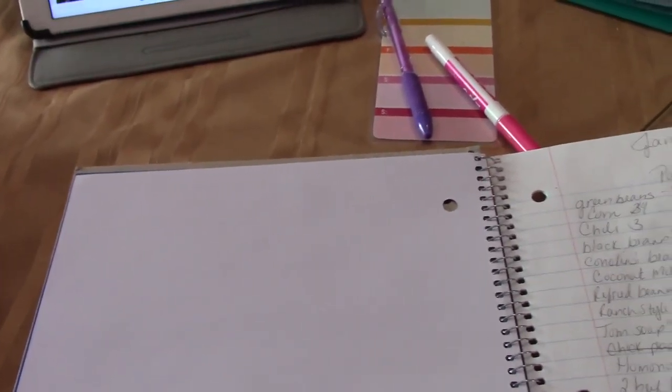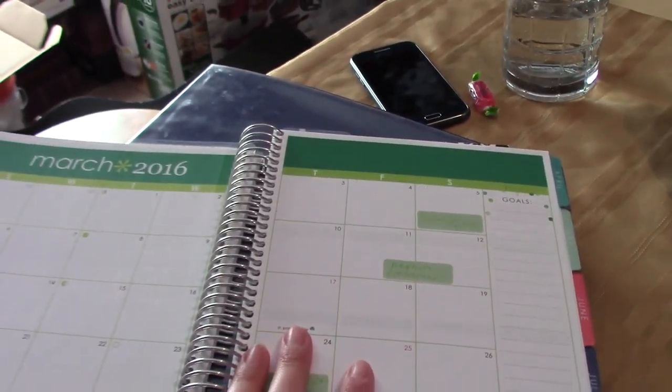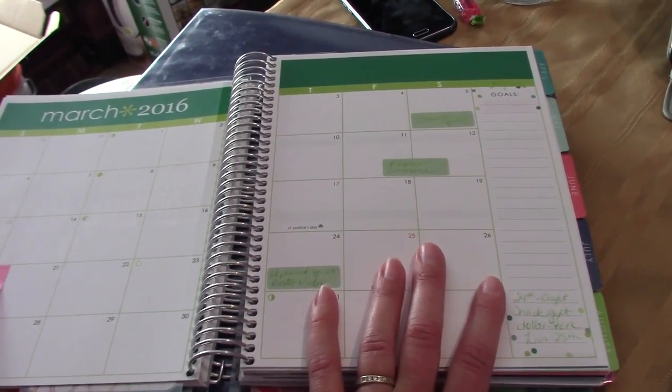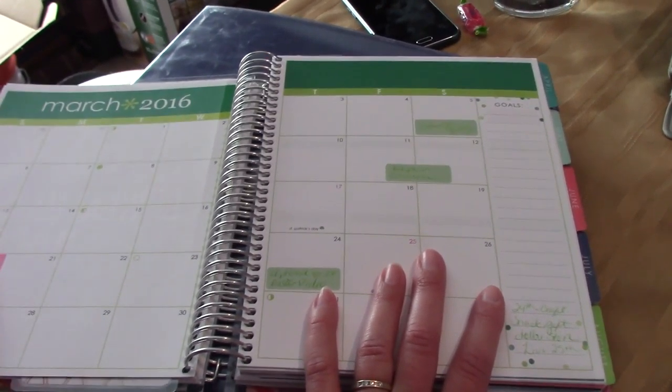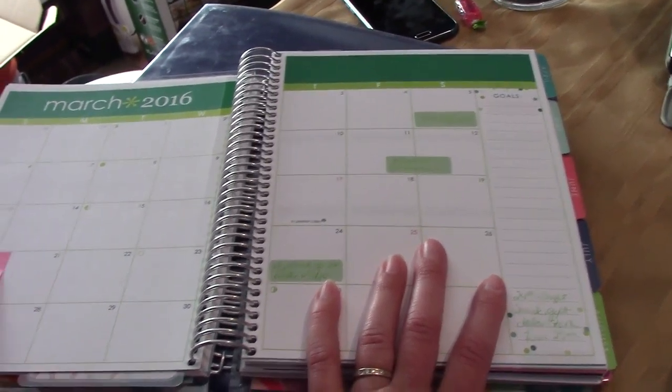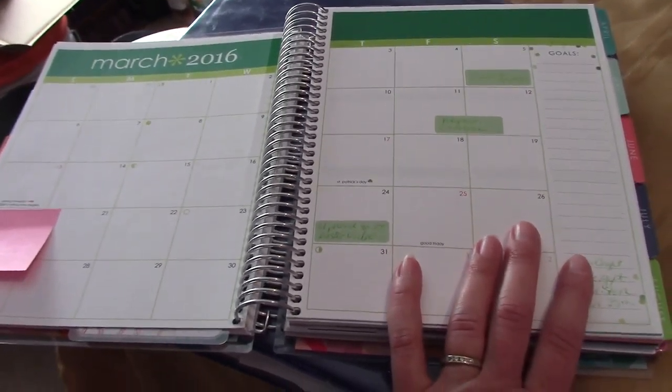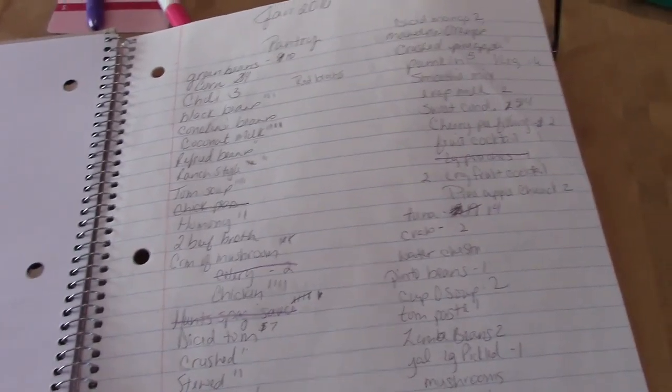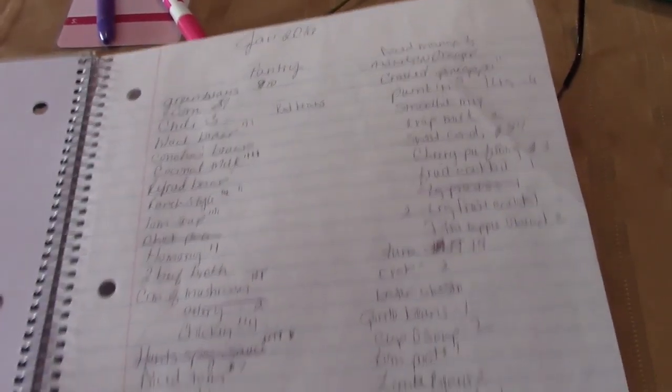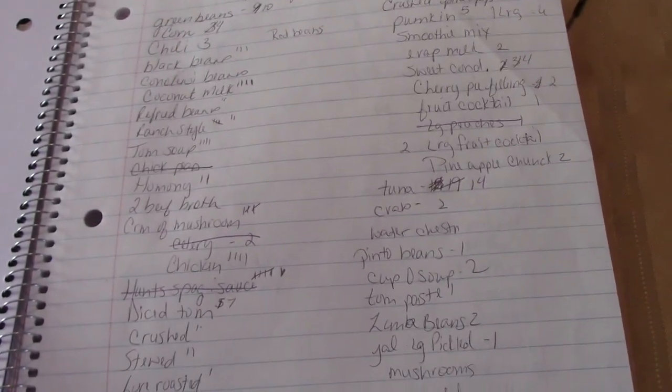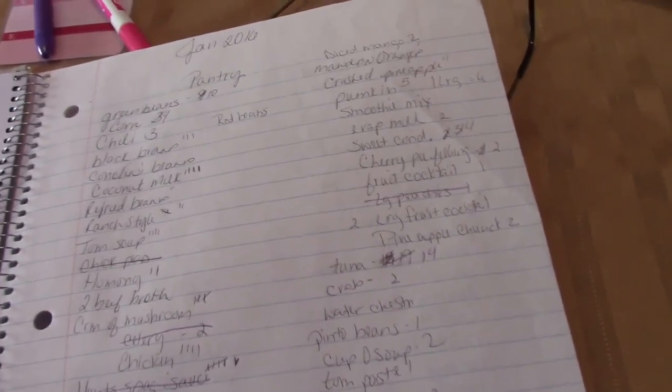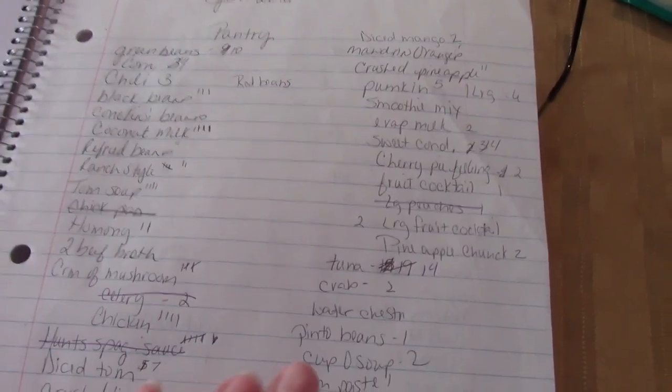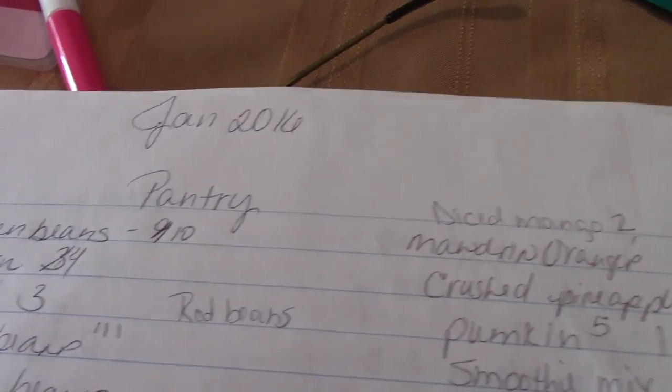Okay, when I first sit down to meal plan, these are the things I bring with me. I bring my planner so I can see what things we have going on during the month - if we're going to be out of town, if there's any holidays, birthdays, things that I need to remind myself of. I have my inventory. Twice a year I take inventory of my pantry and my freezers so I know what I have so I don't waste things. I just did inventory in January so I have my list.